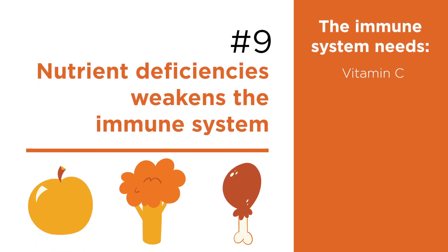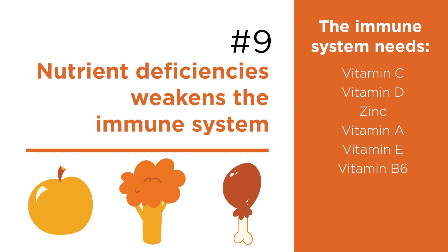Number nine: nutrient deficiencies. Vitamin C supports the immune system in more than 20 ways, and chronic deficiency is a fatal condition. Low levels of vitamin D are associated with respiratory disease severity and incidence, as well as autoimmune diseases. Without sufficient zinc and vitamins A and E, your body can't produce certain immune system cells. Without vitamin B6, your body can't make antibodies. Vitamin B12 and folate (vitamin B9) are also requirements for a normal immune response. Unhealthy diets that are not focused on whole, nutrient-rich foods often fall short in these vitamins and minerals, and thus weaken the immune system.